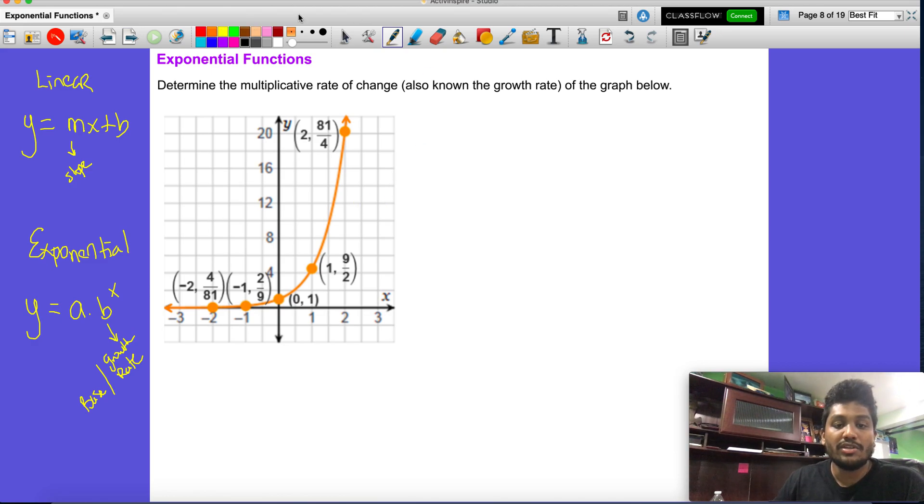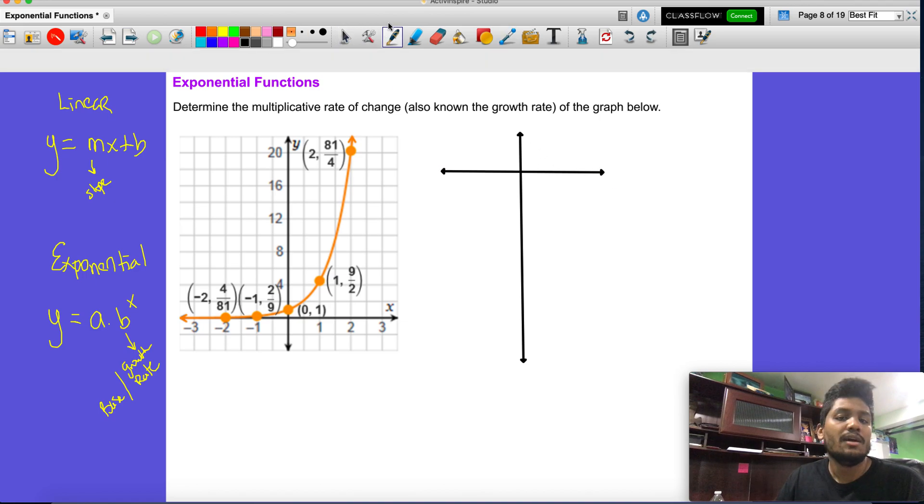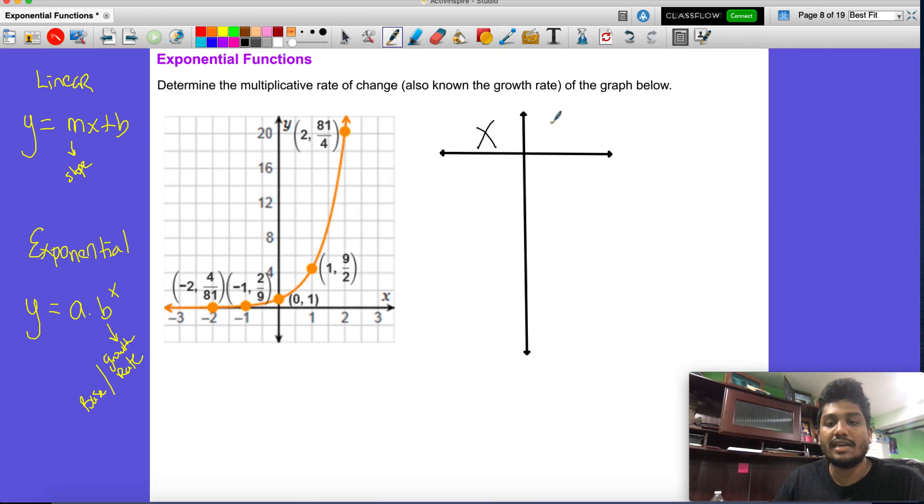And to do that we can just go ahead and make a table. So go ahead and make the same table that we did last time. Let me just go ahead and make a table really quickly. All right, so we have our table and we're just going to go ahead and fill in whatever coordinates we can. So we know this is x, we know this is y.